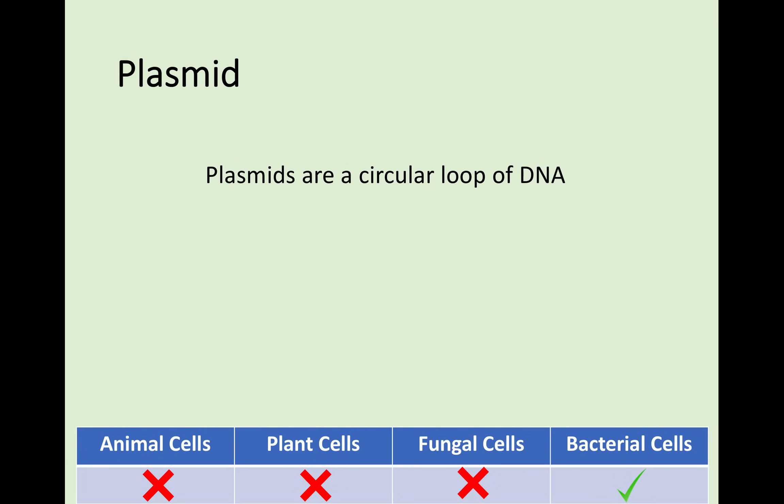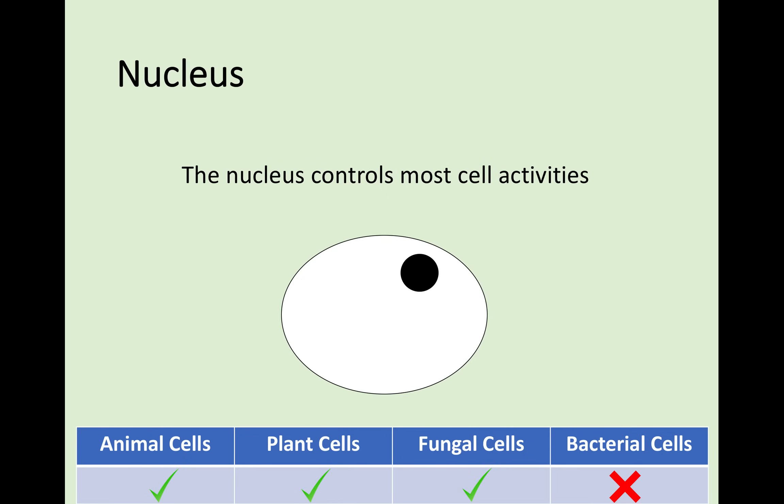Plasmids are found in bacterial cells, so they are a good way of identifying a bacterial cell straight away. They do not have a nucleus; they have plasmids that do the same job. They are the location of genetic material. Speaking of the nucleus, we find these in animal cells, plant cells, and fungal cells, but not in bacterial cells. These control most cell activities and are where the genetic information is stored in a cell.